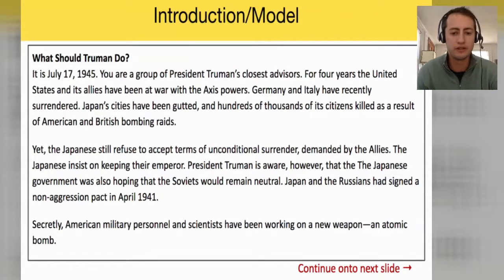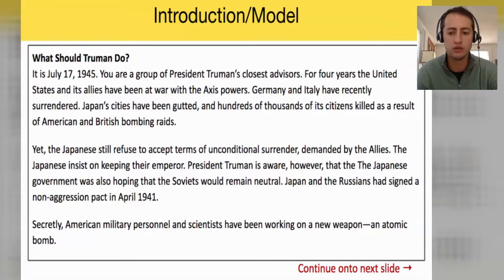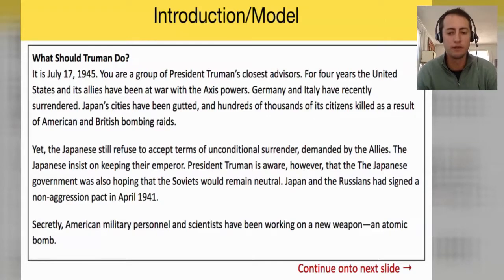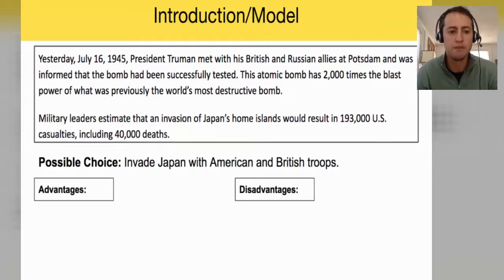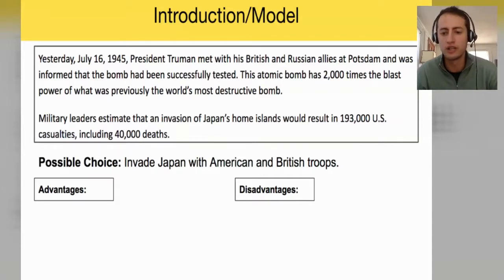Japan's cities have been gutted and hundreds of thousands of citizens killed as a result of American and British bombing raids, yet the Japanese still refuse to accept the terms of unconditional surrender demanded by the allies. The Japanese insist on keeping their emperor. President Truman is aware, however, that the Japanese government was hoping the Soviets would remain neutral — Japan and Russia had signed a non-aggression pact in April 1941. Secretly, American military personnel and scientists have been working on an atomic bomb. Yesterday, July 16th, 1945, Truman was informed the bomb had been successfully tested — it has 2,000 times the blast power of what was previously the world's most destructive bomb. Military leaders estimate that an invasion of Japan's home island would result in 193,000 U.S. casualties, including 40,000 deaths.